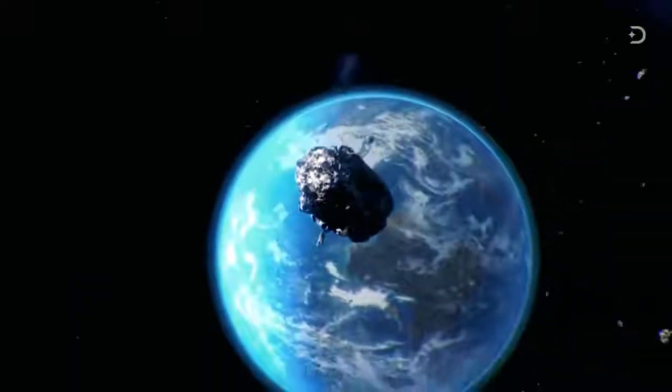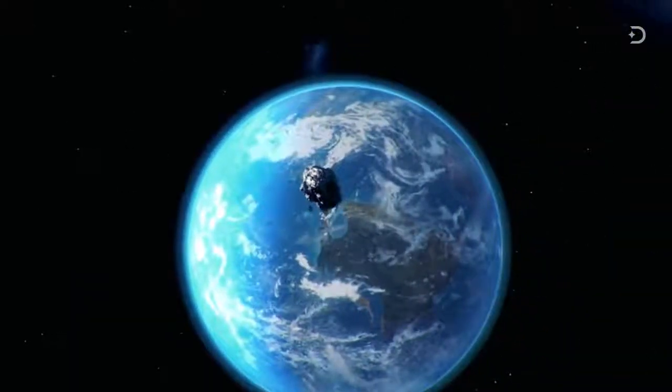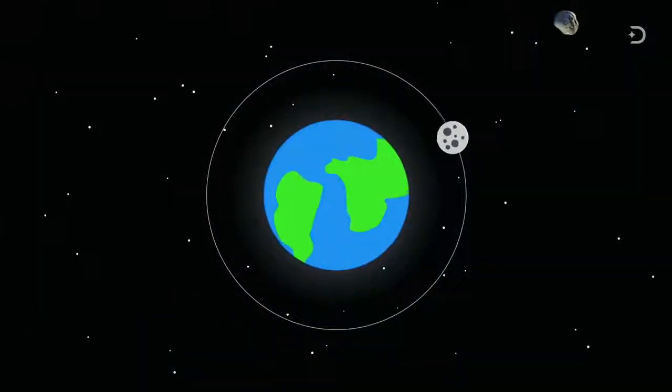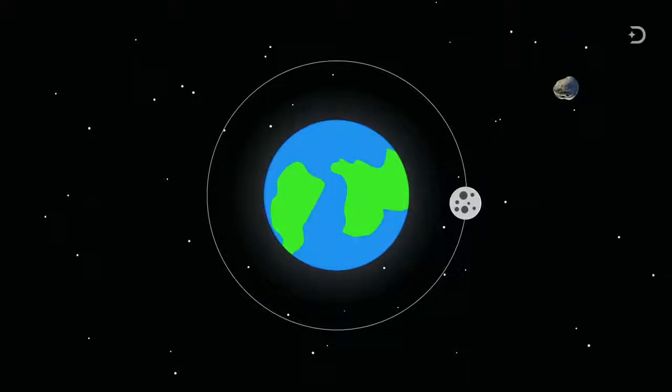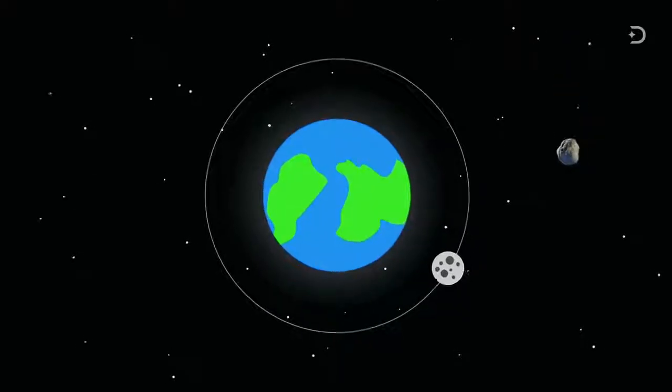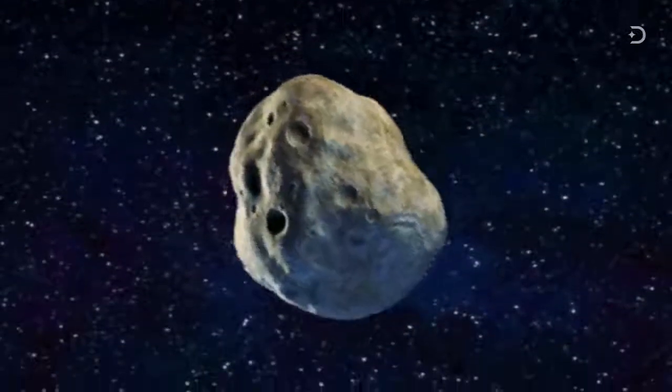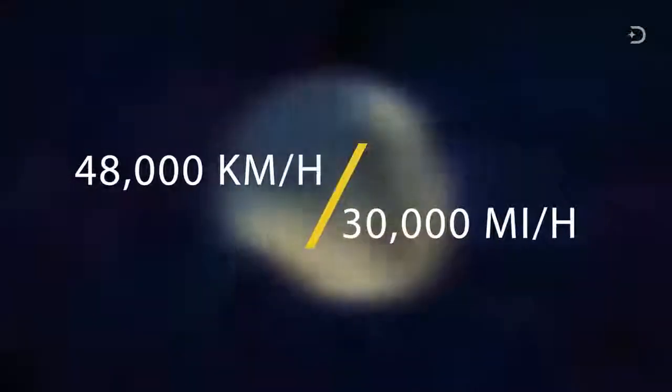The next time the asteroid will pass close to Earth will be on October 26, 2028. It is predicted it will be about two and a half times the moon's distance from Earth at its closest point. It is estimated to be about a mile wide and is traveling at a speed of 48,000 kilometers or 30,000 miles per hour.